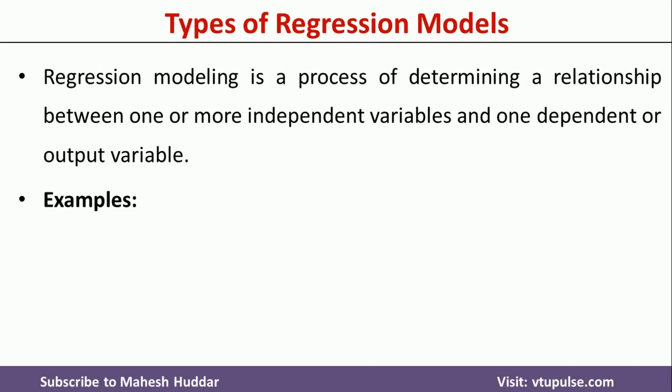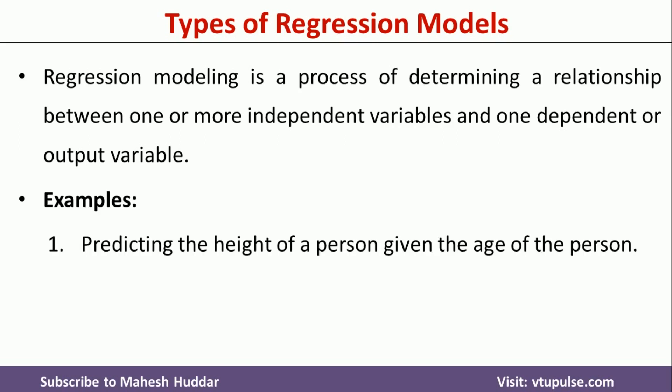For example, let us say that we want to predict the height of a person given the age of a person. In this case, age of a person is the independent variable — we know that particular value — and we want to predict the value of height, that is the dependent variable. Height depends on age in this case.